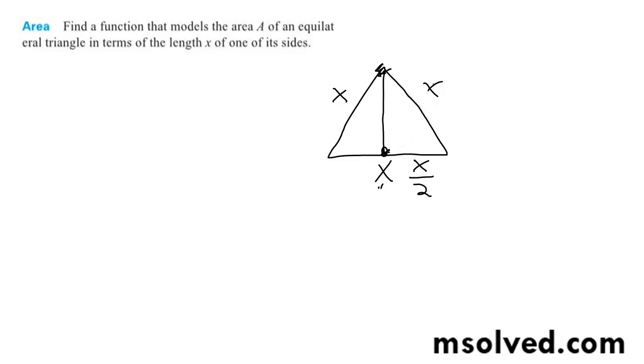In order to find that, we know this side is x and this is x divided by 2. So this is (x/2)² plus, I'll call this length y, y² equals x².